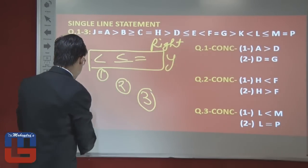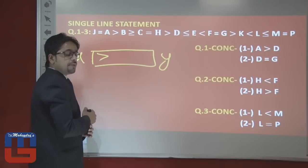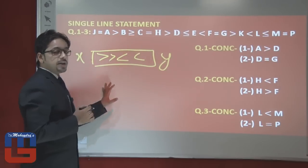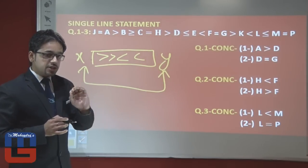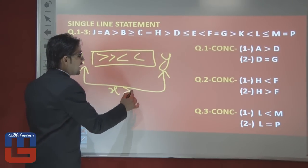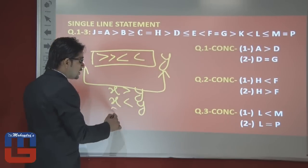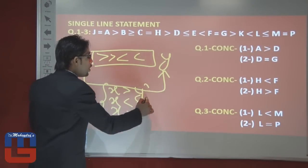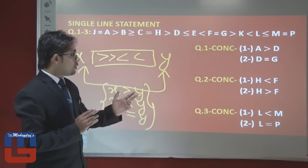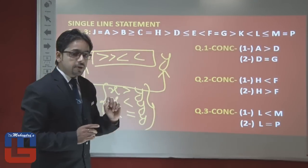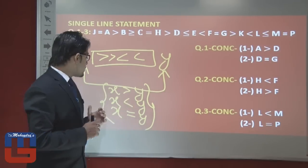This is the doubted condition: if some symbols are moving left and some are moving right, we cannot establish a direct relation between X and Y. In that case, X can be greater than Y, X can be smaller than Y, or X can be equal to Y. If all three symbols are present in both conclusions, the answer is 'either or.' If any one symbol is missing, the answer is 'neither nor.'